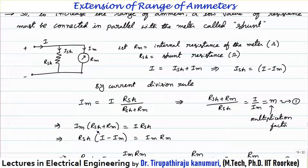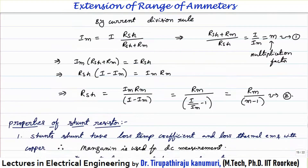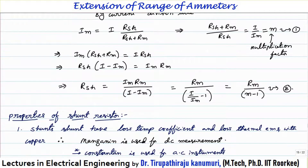Cross-multiplying: im × (Rsh + Rm) = i × Rsh. Separating terms: Rsh × (i − im) = im × Rm. Therefore, Rsh = im × Rm / (i − im). Dividing numerator and denominator by im gives Rsh = Rm / (i/im − 1), and since i/im = m, the result is Rsh = Rm / (m − 1). This is the basic formula for calculating the required shunt resistance.